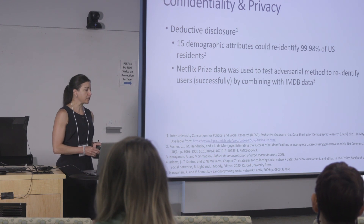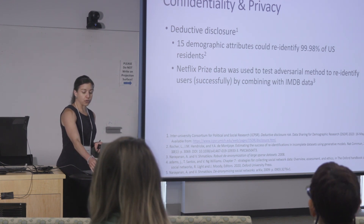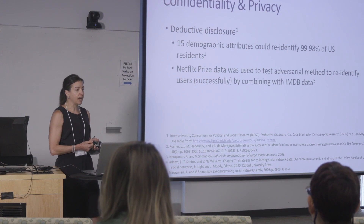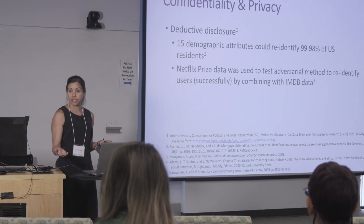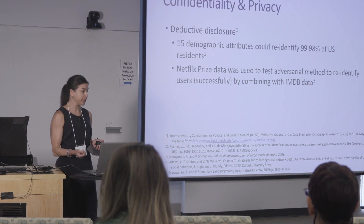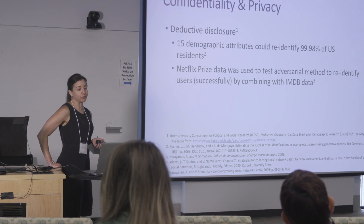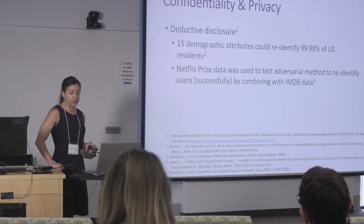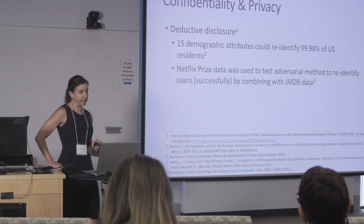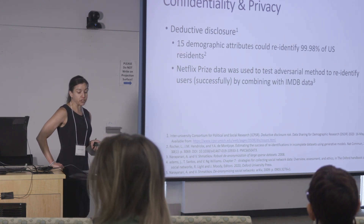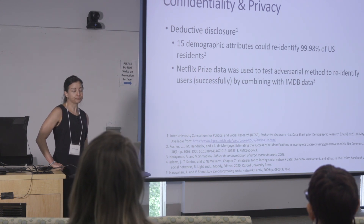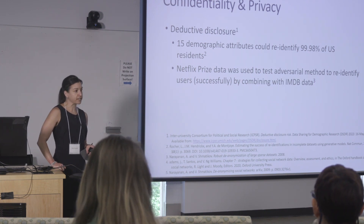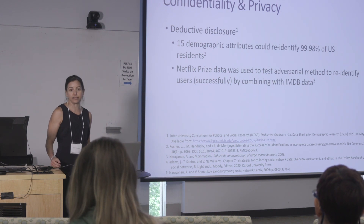The third citation describes the fallout from the Netflix Prize. About 10 or 15 years ago, Netflix released an anonymized dataset of half a million users so people could compete to develop a better recommendation algorithm. Instead, two computer scientists at UT Austin used those data, combined them with IMDB ratings scraped off the website, and developed an algorithm showing they could re-identify the users in the Netflix Prize dataset. They then went a step further and combined the re-identified users with political preferences and other sensitive information they found online.